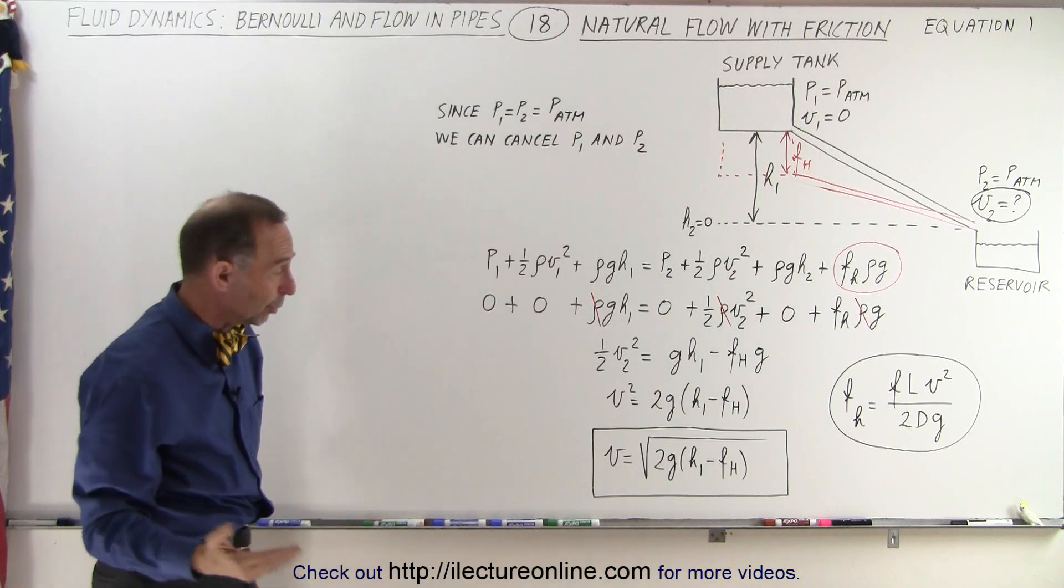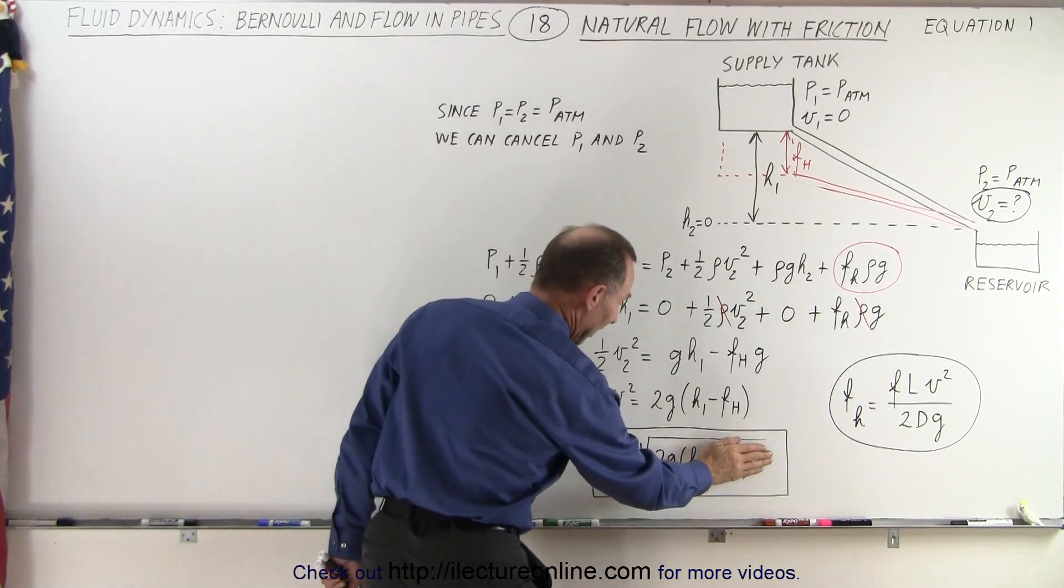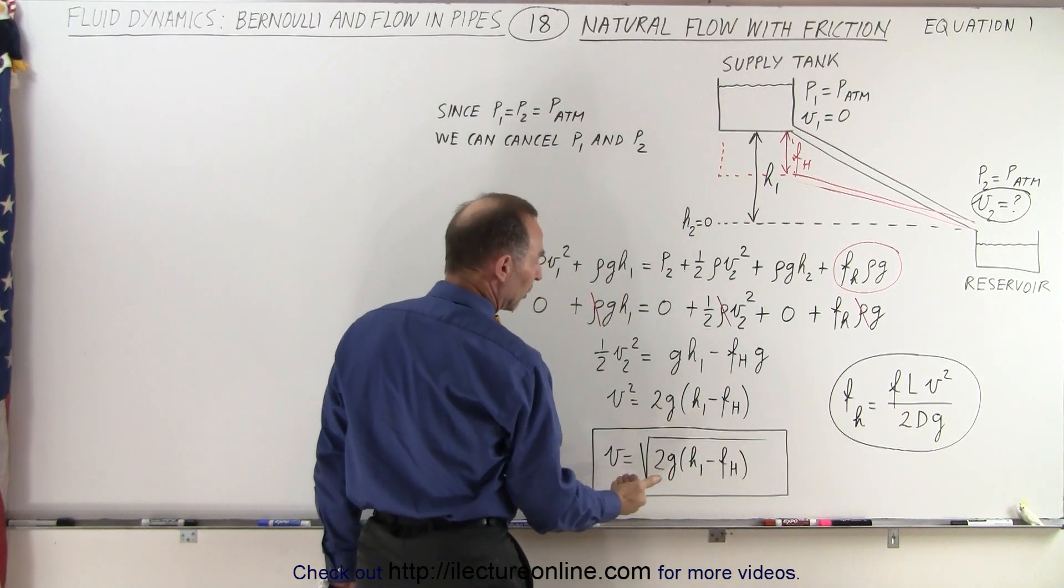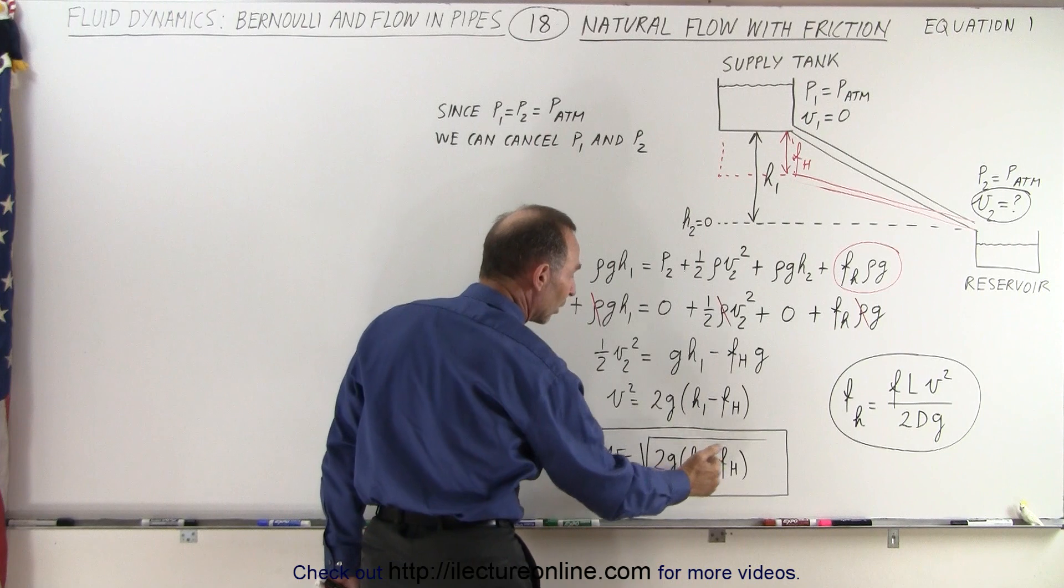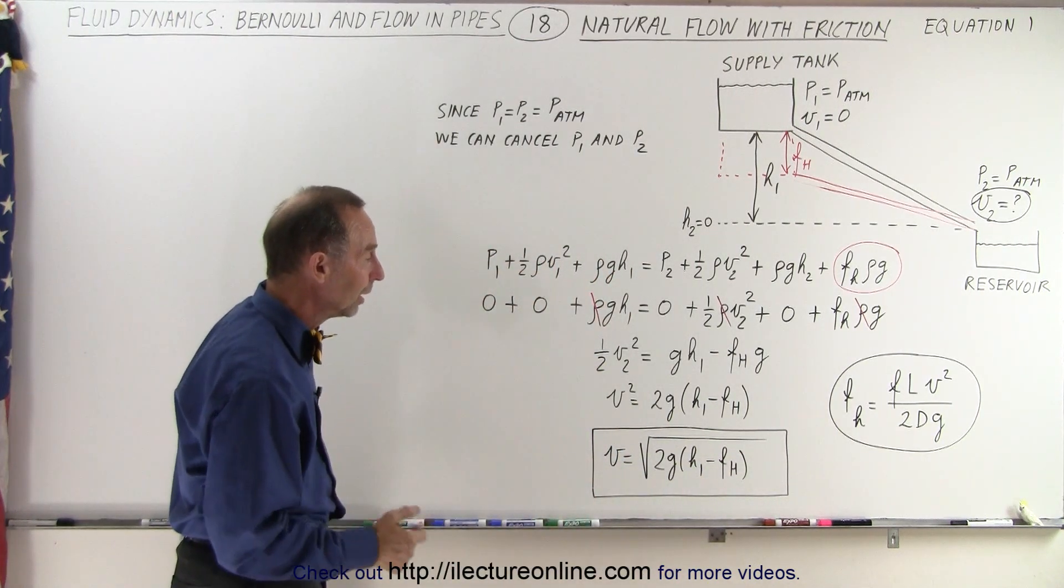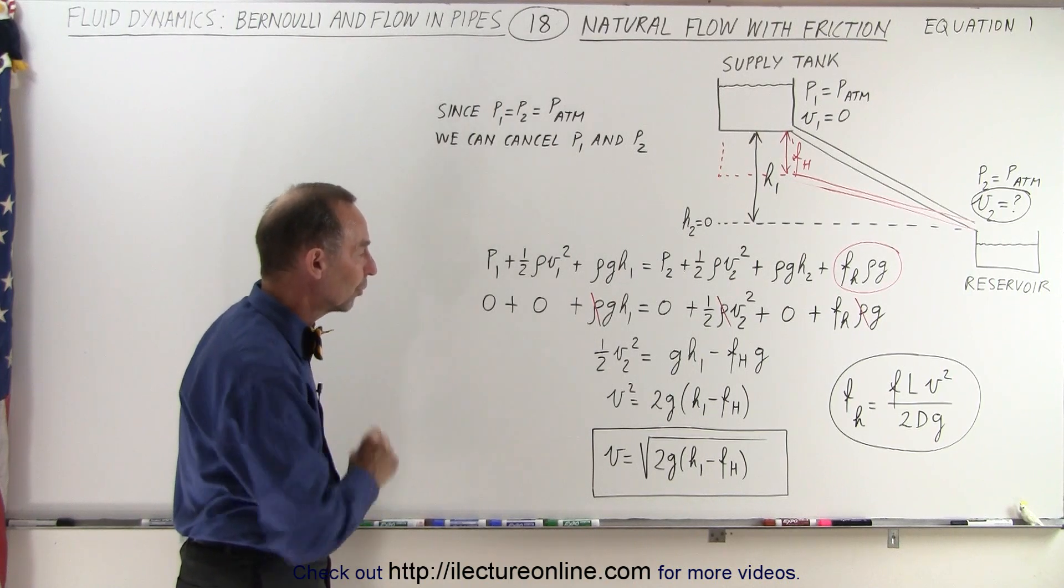And then if we take the square root of both sides, notice instead of having the normal velocity being equal to the square root of 2gh, it's going to be the square root of 2g times h1 minus the frictional head loss quantity. And of course, that amount is in meters as well, and so that's why we have that reduced velocity.